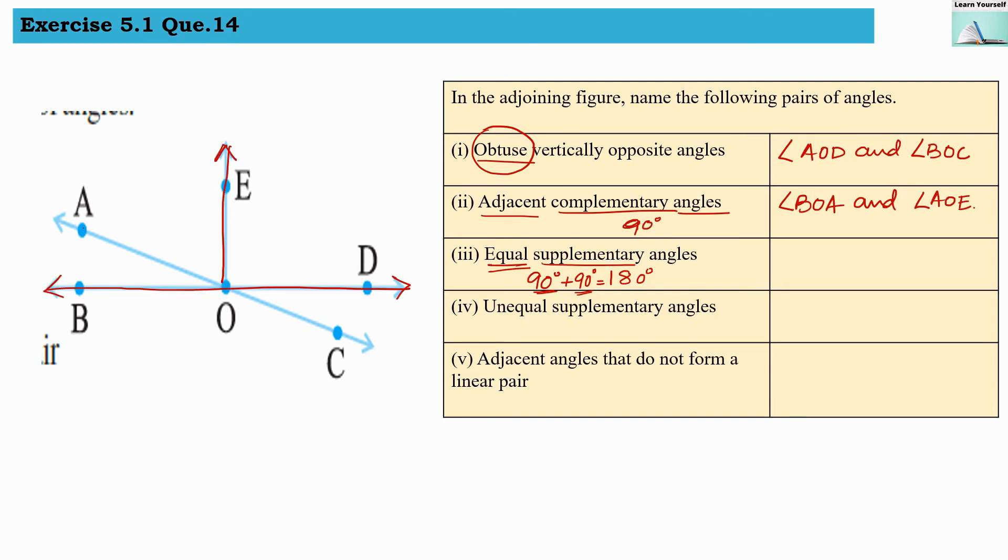So here if we see this angle, angle BOE and another angle, angle EOD. So these two are supplementary as well as their measure is 90 degrees. That means they both are equal and supplementary.